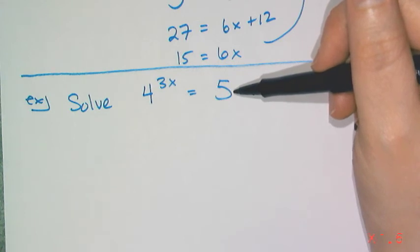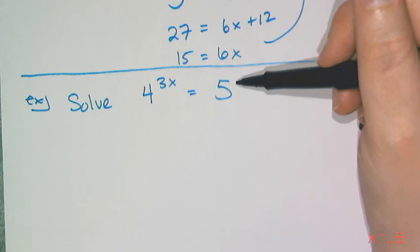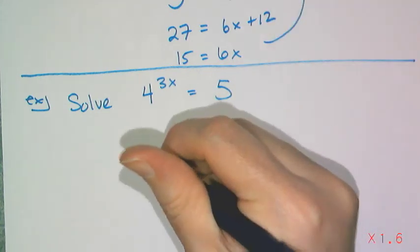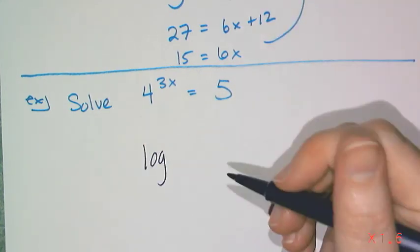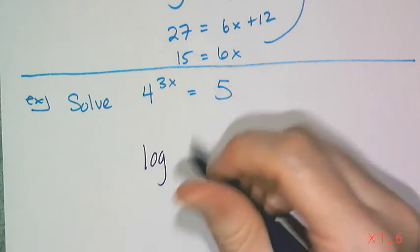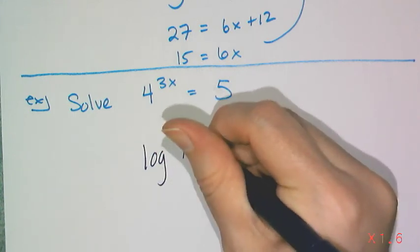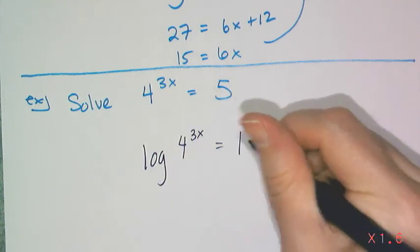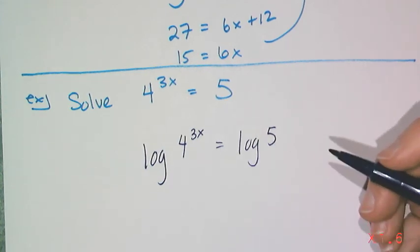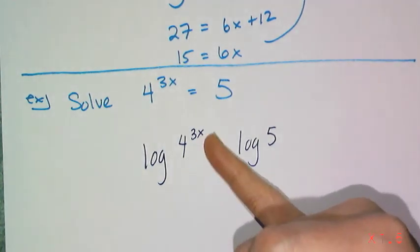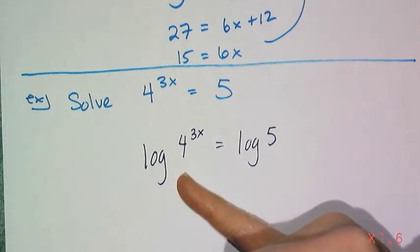So what I'm going to do is I'm going to choose a base and take the log of both sides. Now I'm going to use the common log or base 10. So I have log of 4 to 3x power equals log of 5. Now I have to get this 3x out of the exponent. And by just taking the log of both sides, I haven't done that yet.